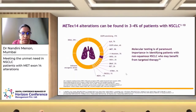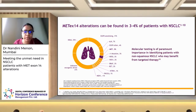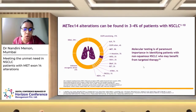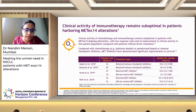In lung cancer, MET mutations can be seen in 3 to 4% of patients, so it is not a common mutation. However, it is important to identify it because MET-targeted therapy will significantly impact outcomes. MET-mutated lung cancer, from retrospective and other study data, seems to do poorly on chemotherapy and immunotherapy, and outcomes are significantly improved when we target MET. The clinical activity of immunotherapy remains suboptimal in lung cancers with MET exon 14 alterations.